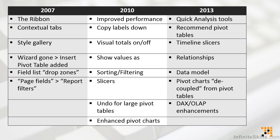A couple of other things that happened in 2010 were undo for large pivot tables. This may not seem like a big deal, but in prior versions when we were working with large amounts of source data, we sometimes lost our ability to undo our last action. This was fixed in 2010, so undo for large pivot tables is now available. And lastly, there were some enhancements to pivot charts made in 2010 — in short, these enhancements made pivot charts much easier to work with.